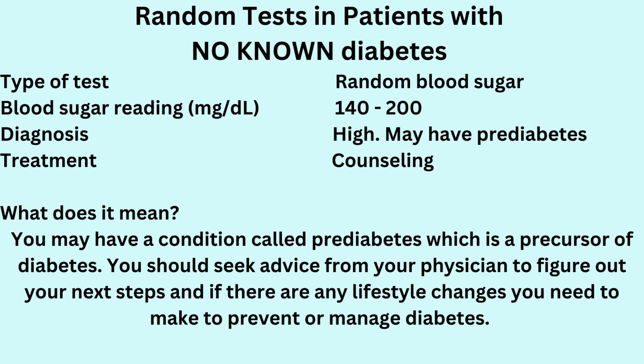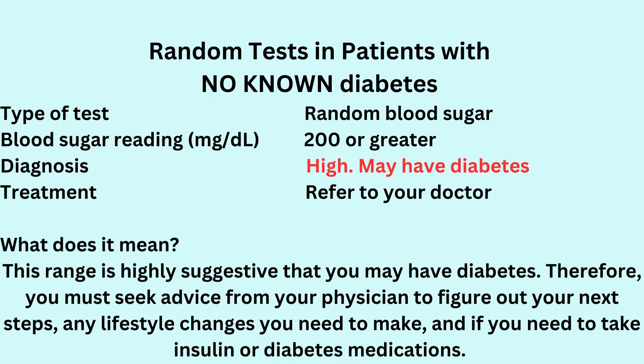If the blood test you had was a random blood sugar and you got a reading above 200 milligrams per deciliter, then your blood sugar level is high. Patients may have developed diabetes at this point. Therefore, you must seek advice from your physician to figure out your next steps, any lifestyle changes you need to make, and if you need to take insulin or diabetes medications.